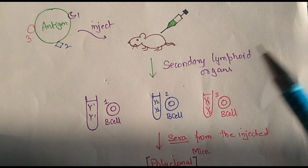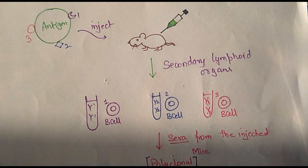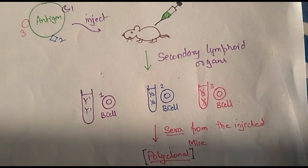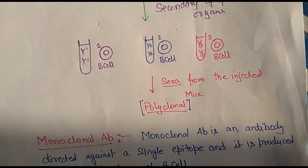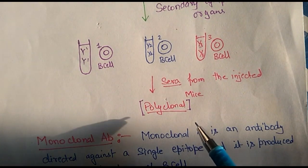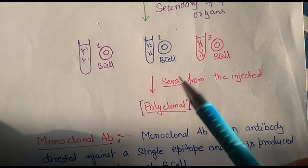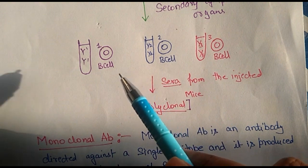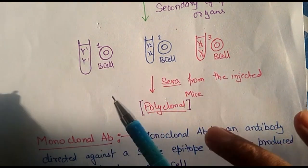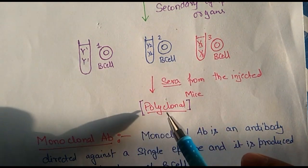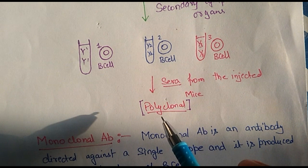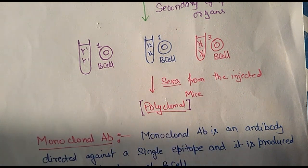So what would you call this kind of sera? This is very easy to understand. This kind of sera would definitely be called a polyclonal sera. Why polyclonal? Because there are three clones of B cells — three means poly. And what is clonal? Let's have a look at this word clonal.